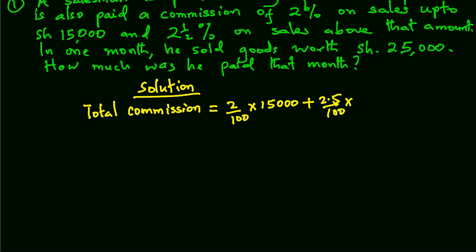Now, 25,000 minus 15,000, we get a total sales of 10,000 above 15,000. This would give us 300 plus 250, that is 550 shillings as a commission.